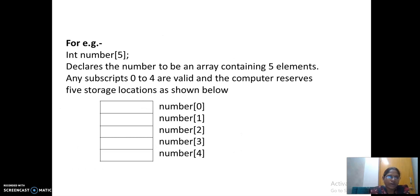Int number 5. This represents that the number is the name of the array, which can accommodate 5 values, and all those 5 values are of type integer. This declares the number to be an array consisting of 5 elements. Any subscript 0 to 4 are valid, and the computer reserves 5 storage allocations, which is as follows: Number 0, number 1, number 2, number 3, and number 4.